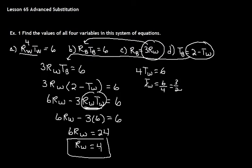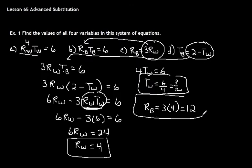So we're making our way up. So we have TW, we have RW. We need to get some other guys. We can get RB equals 3RW. RW is 4, so it would be 3 times 4. RB equals 12.